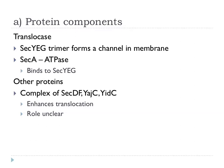There are other proteins found when doing screens for protein-protein interactions and dependencies of the system. SecDF, YajC, and YidC are all involved in enhancing translocation. Sometimes their precise roles are not clear and haven't all been sorted out yet, although there has been some progress.